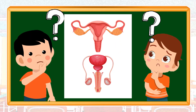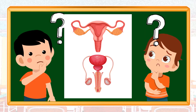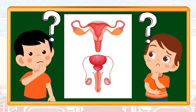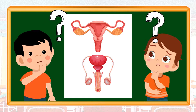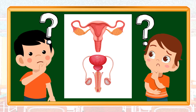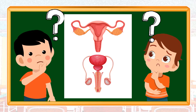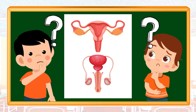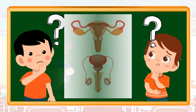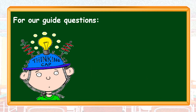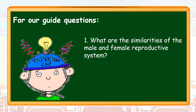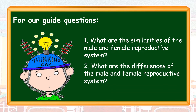From our previous lessons, you have learned that different parts of the male and female reproductive system have their specific functions. But how do these two systems have things in common? How about their differences? Let's find out! For our guide questions: number one, what are the similarities of the male and female reproductive system? And number two, what are the differences of the male and female reproductive system?